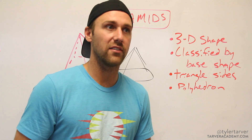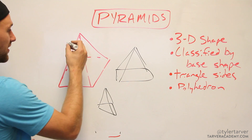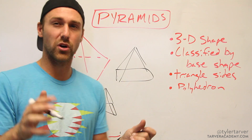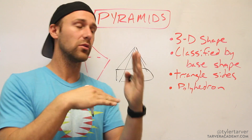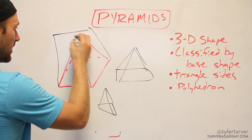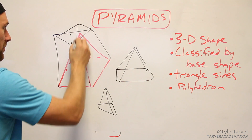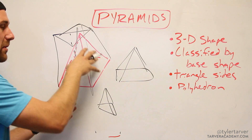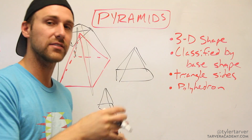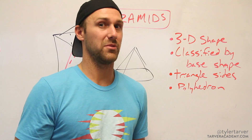Here's a fun fact: with a prism, you connect a shape to the same shape and they're connected by rectangles. If you did that for a pyramid's base, the pyramid would be about one-third the volume of that whole prism. So that's a cool little fact.